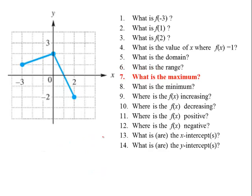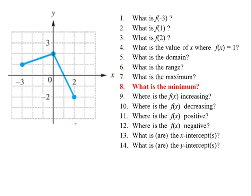What is the maximum? This question asks for the maximum y value for this function, and we see it's here, so the maximum value f of x equals 2. What is the minimum? The smallest value for y — we see that f of x equals negative 2.